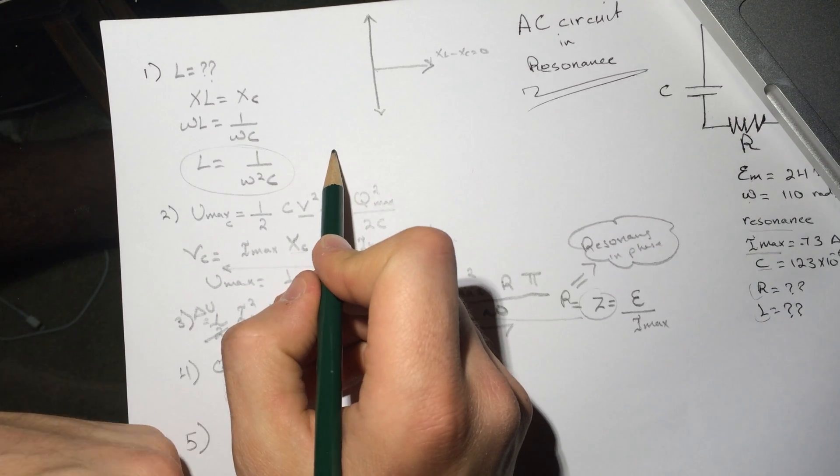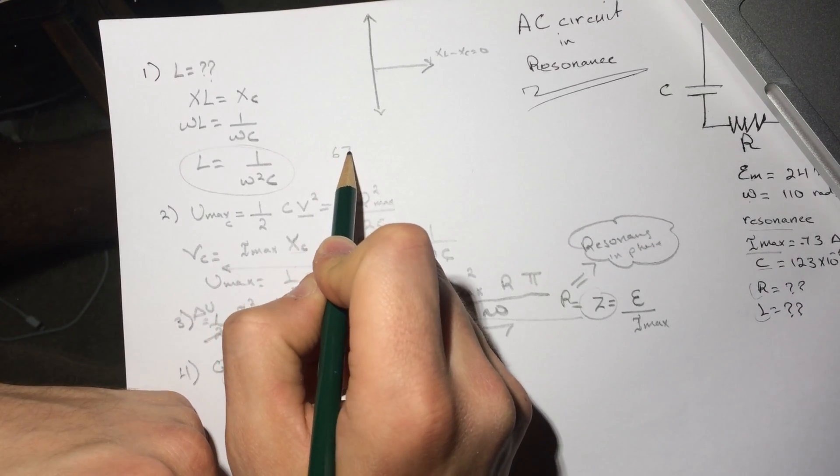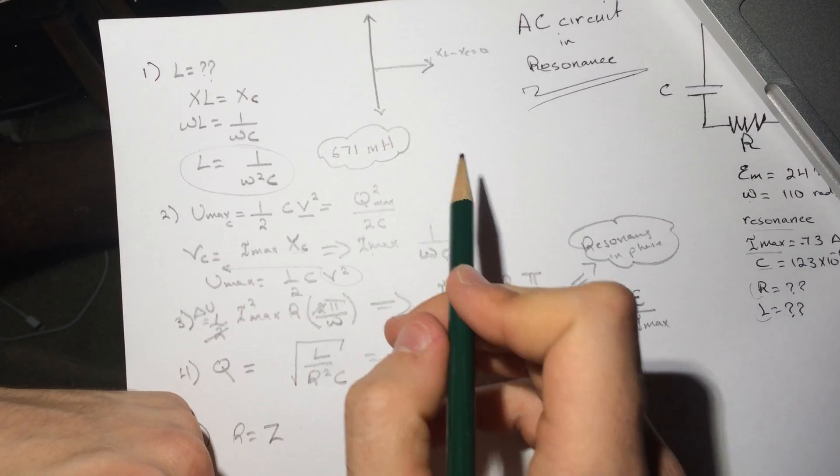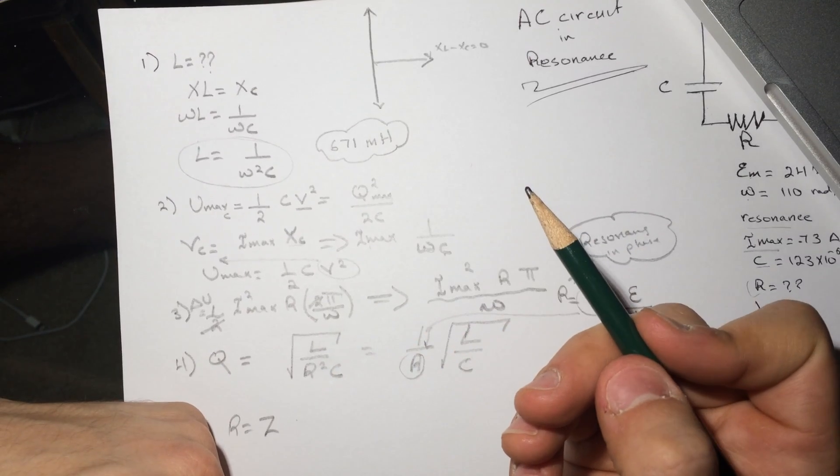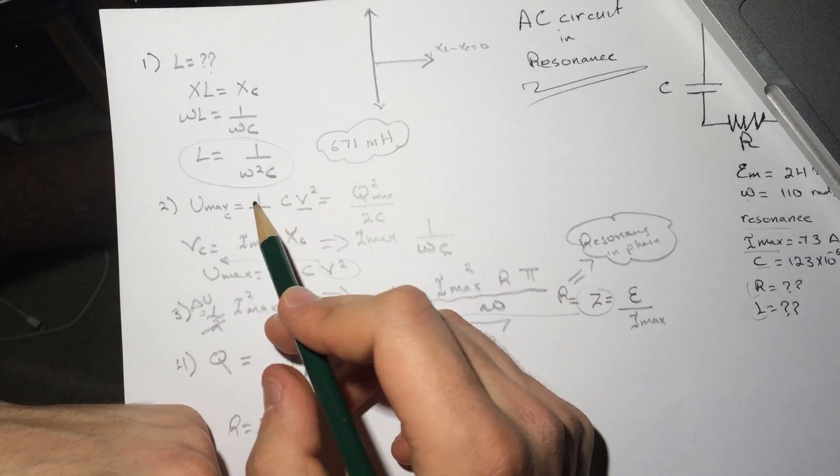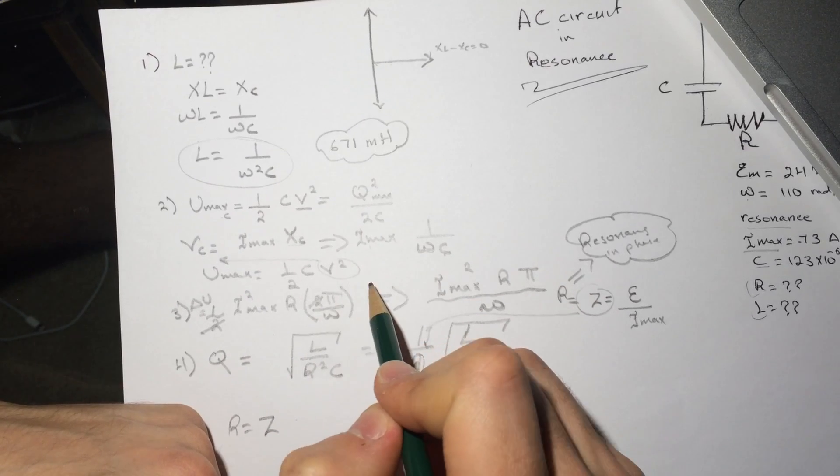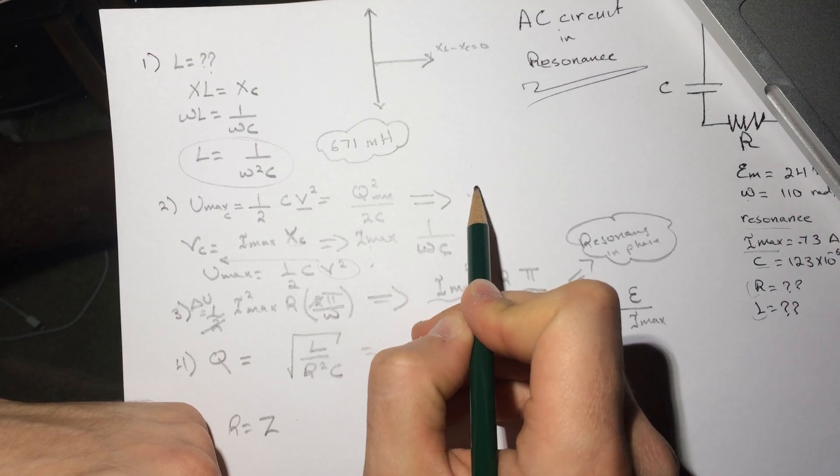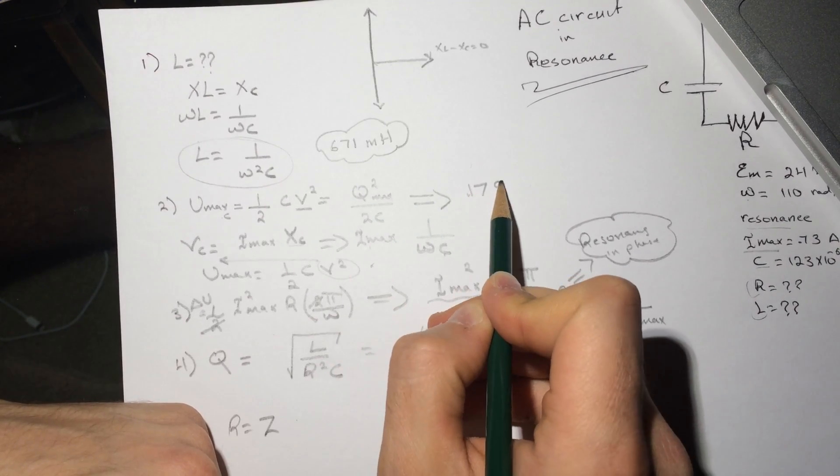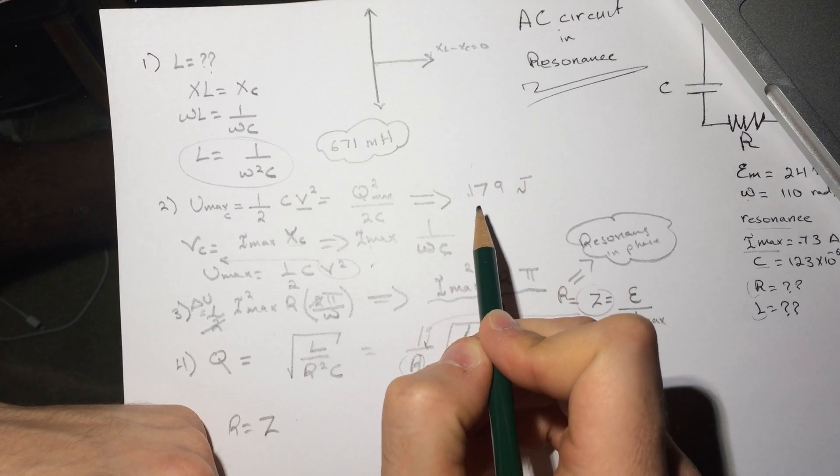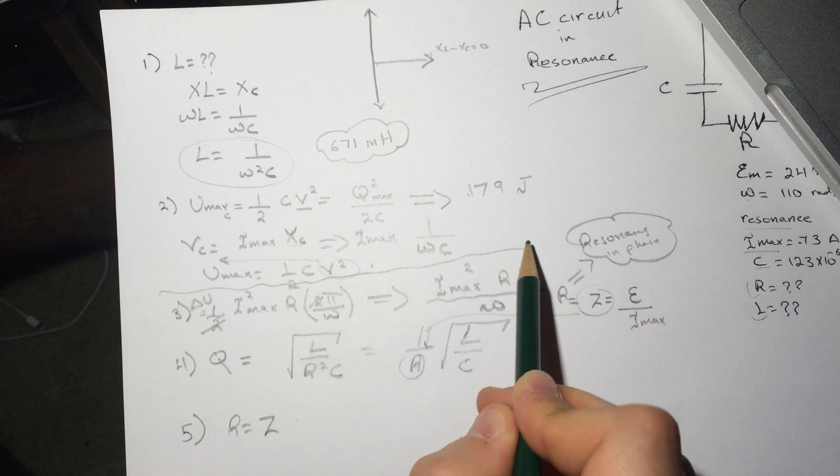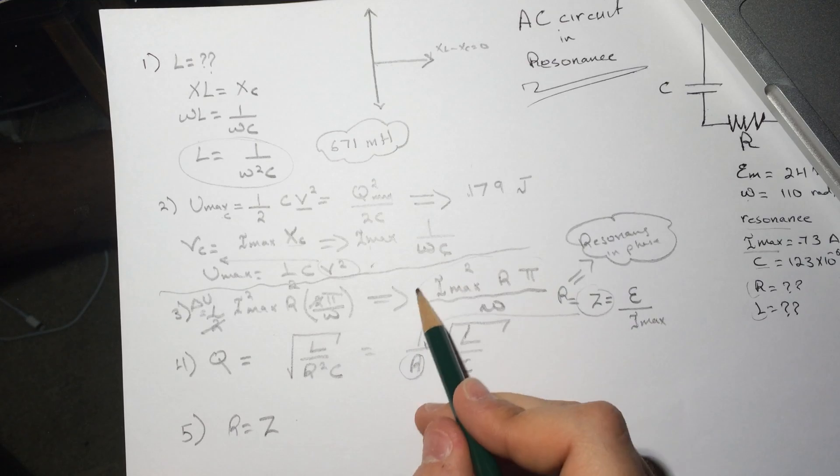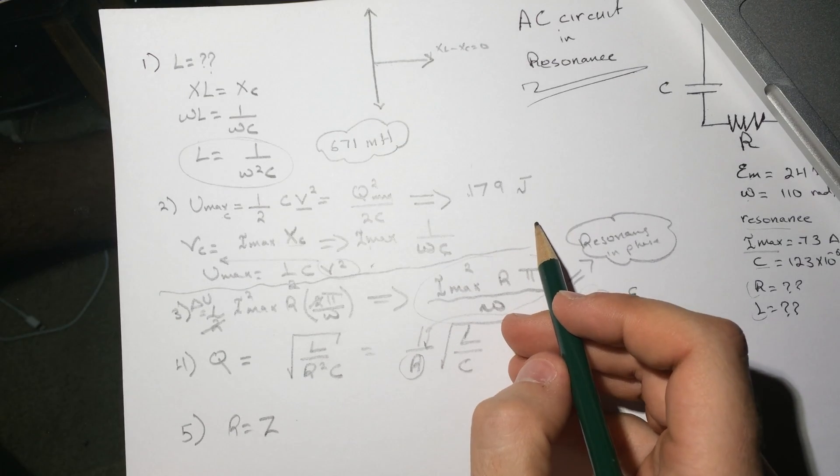For L I got 671 millihenries. For Umax I got 0.179 joules. For question number three I got 0.5 joules.